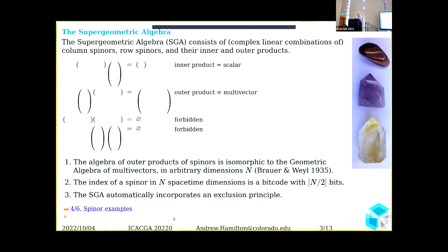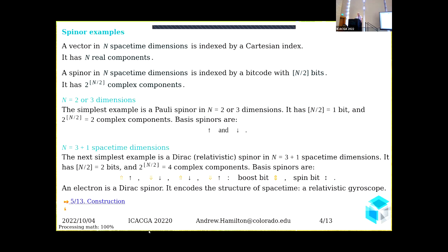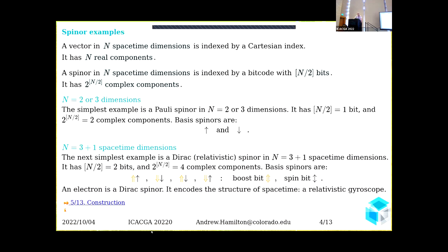Let's remind ourselves of some familiar spinor examples. A vector in N space-time dimensions is indexed by a Cartesian index. I learned about Cartesian vectors in high school, and it was really an eye-opener to realize that I no longer needed geometry at all. I could throw away my geometry textbook and replace it by algebra and do proofs way more quickly.